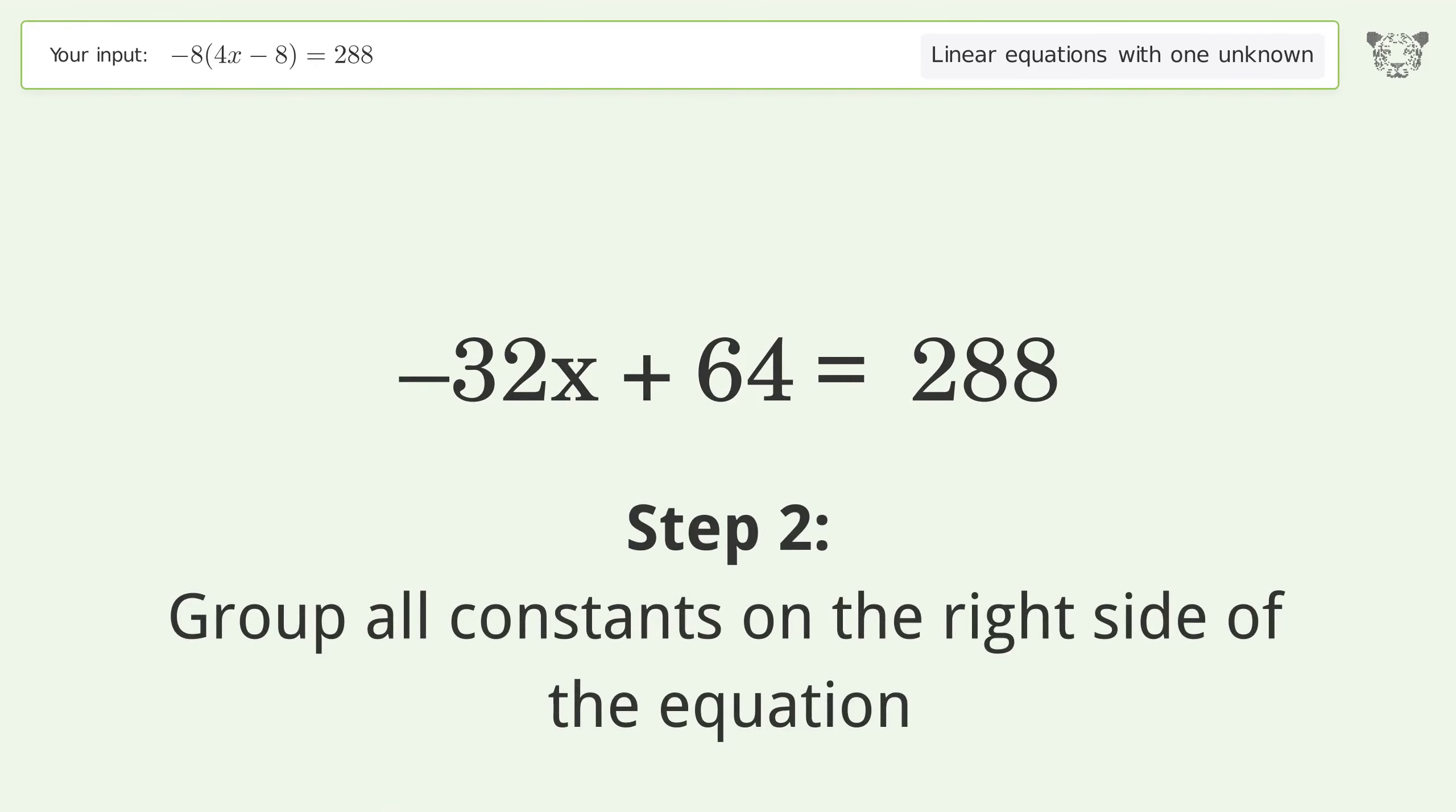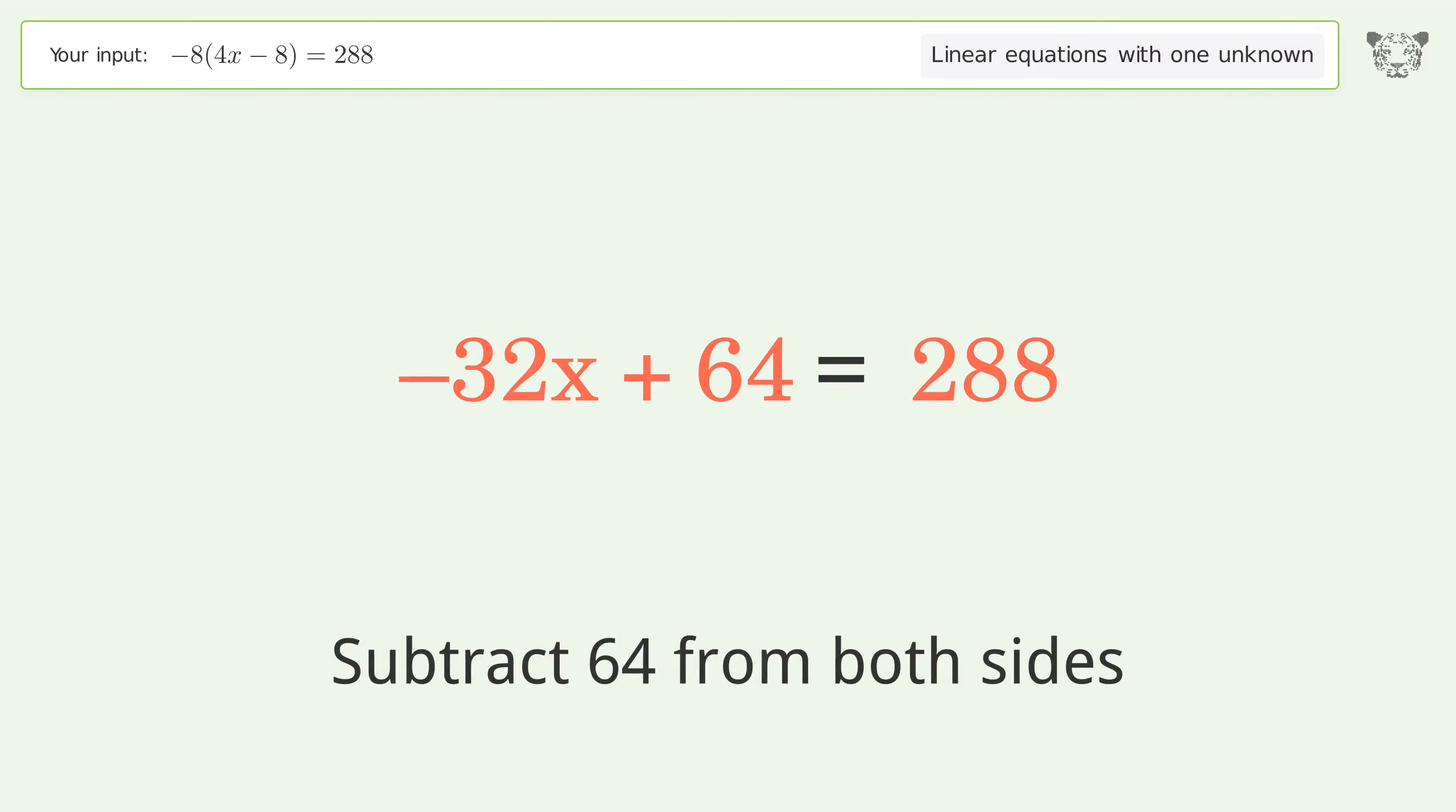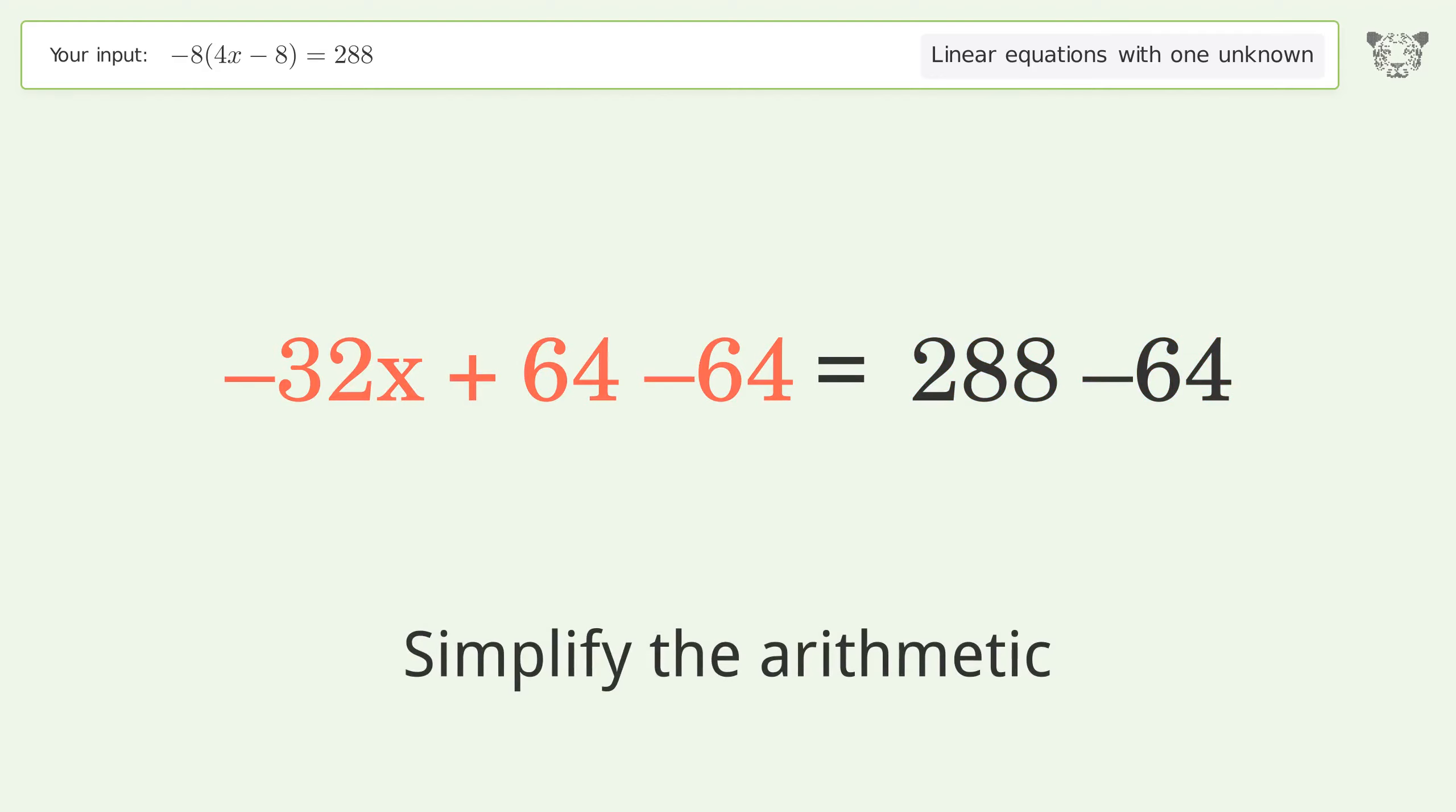Group all constants on the right side of the equation. Subtract 64 from both sides. Simplify the arithmetic.